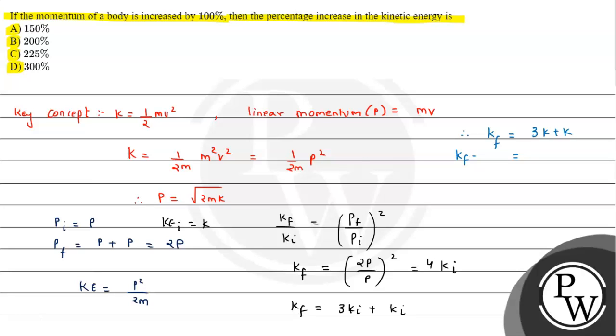K final minus k will be equals to 3 k initial. And furthermore we need the percentage, so we divide by k initial and multiply by 100.